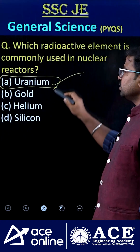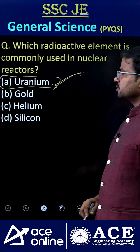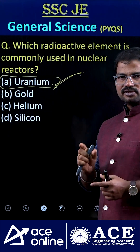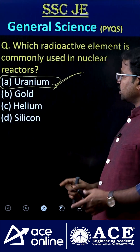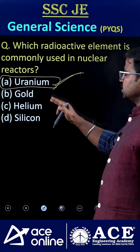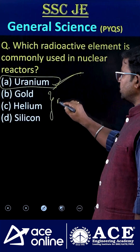Uranium is a radioactive element, and using it we can make fuel rods. Gold, helium, and silicon are non-radioactive elements.